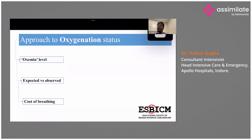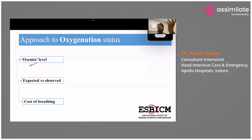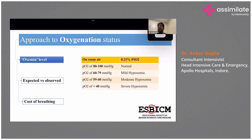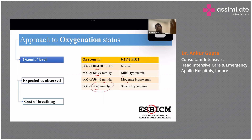We'll start with oxygen status. The ABG tells you PO2 — partial pressure of oxygen in the blood. First you need to check the oxemia. Normal PO2 levels are 80 to 100. If the patient is on room air: 60 to 80 is mild hypoxemia, 40 to 59 is moderate, and less than 40 is severe. These are absolute values — you don't need to change anything. If the PO2 is 65 you call it mild hypoxemia; if PO2 is less than 35 to 40 you call it severe hypoxemia. We are just labeling — not talking about the cause here.